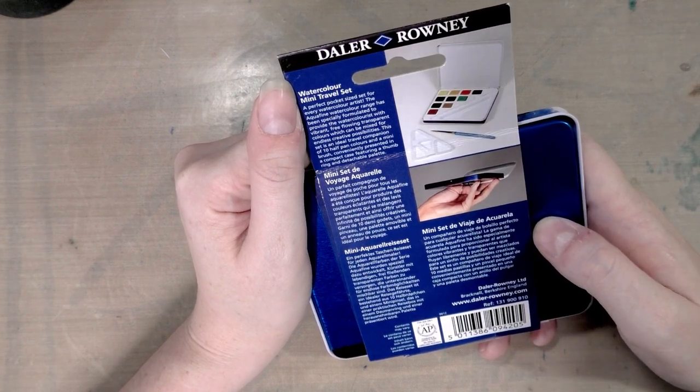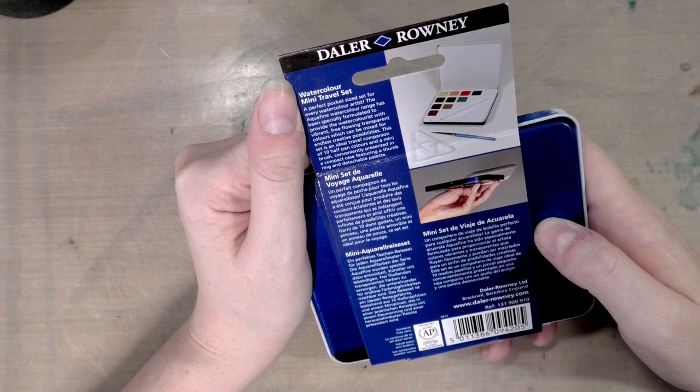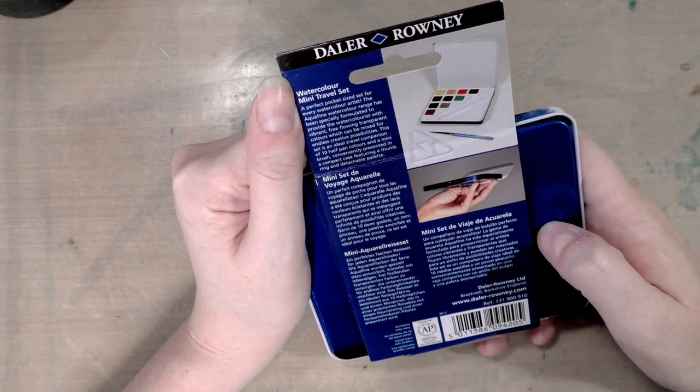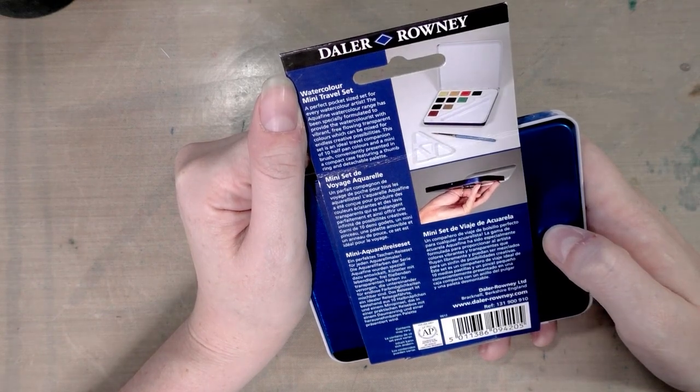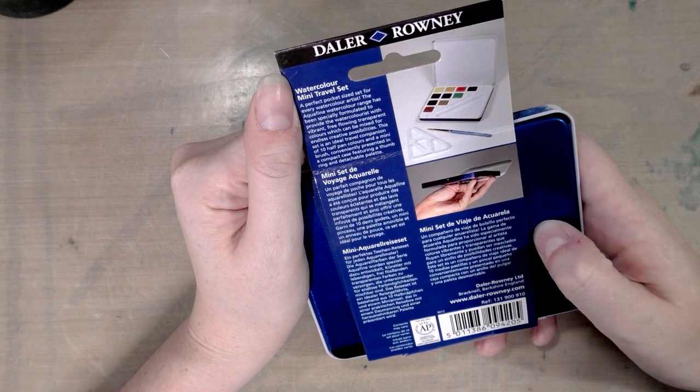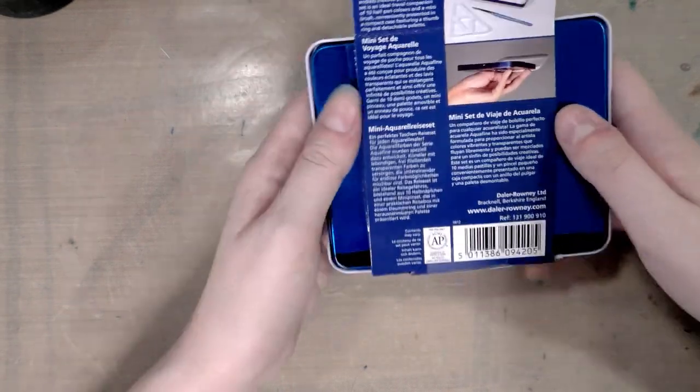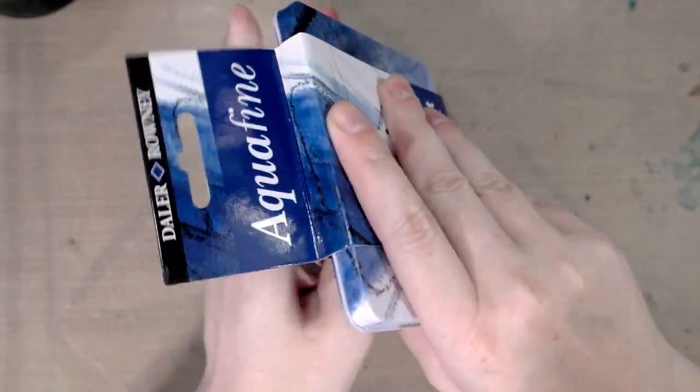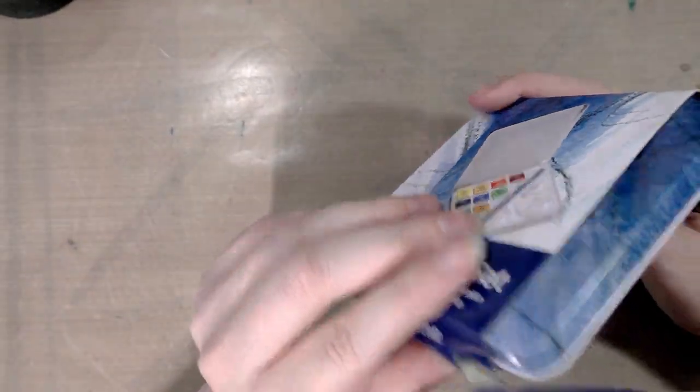This set is an ideal travel companion with 10 half pan colors and a mini brush, conveniently presented in a compact case featuring a thumb ring and a detachable palette.